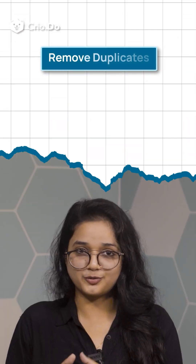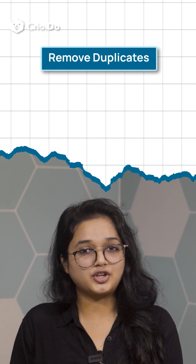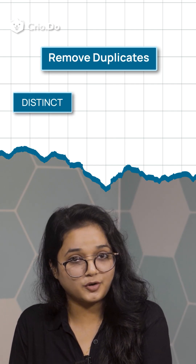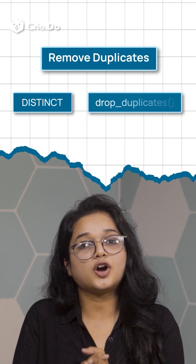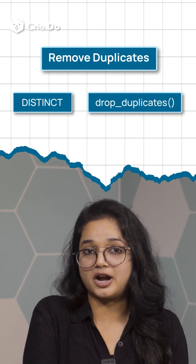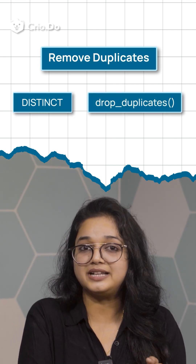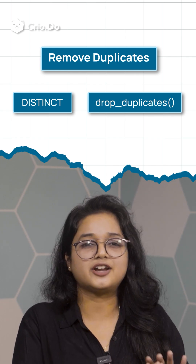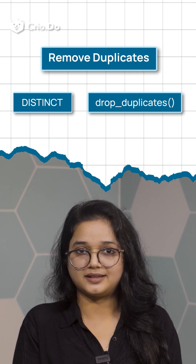Here's a more detailed breakdown of the steps. Remove duplicates: you can use functions like DISTINCT in SQL or drop_duplicates in Pandas, a Python library, to identify and remove duplicates.